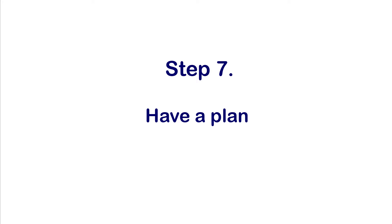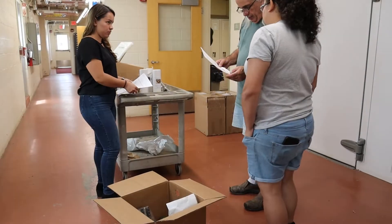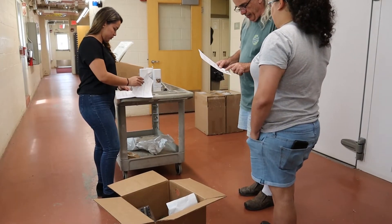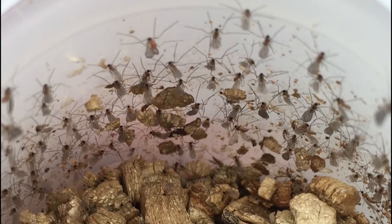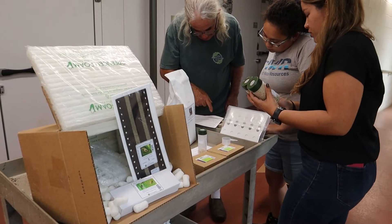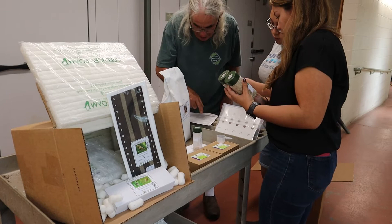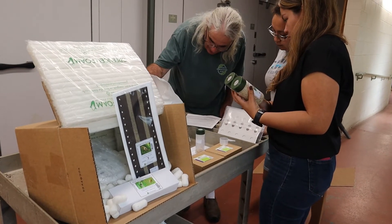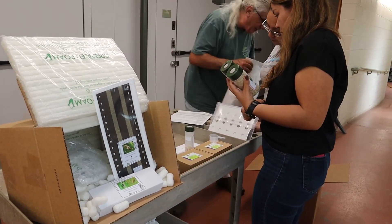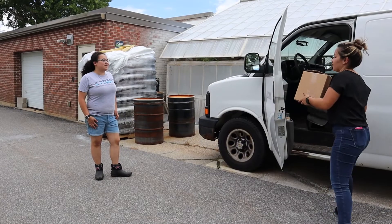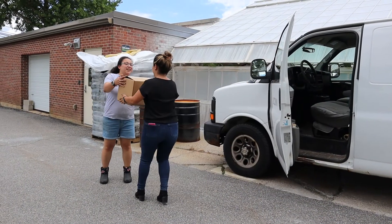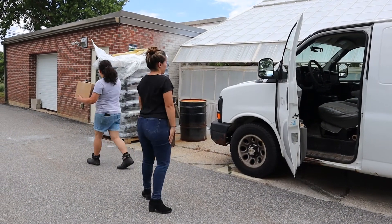Have a plan — biological control agents, especially parasites, are often specific to a pest or may be shipped in a stage that does not attack the targeted pest. Careful planning is needed before starting a program; begin planning 6 months in advance. Establish a good relationship with your suppliers, as this is critical to your success.